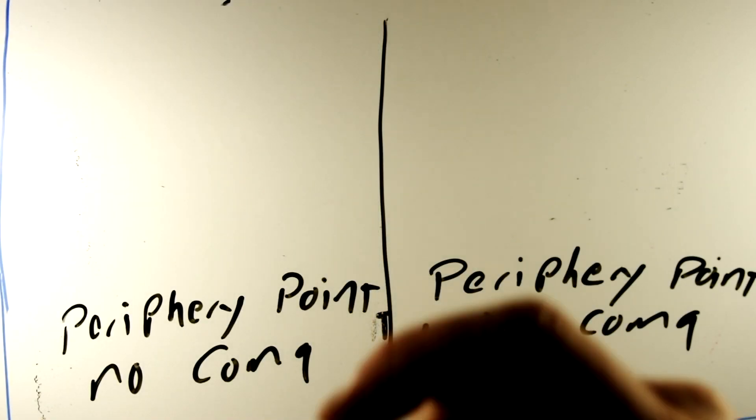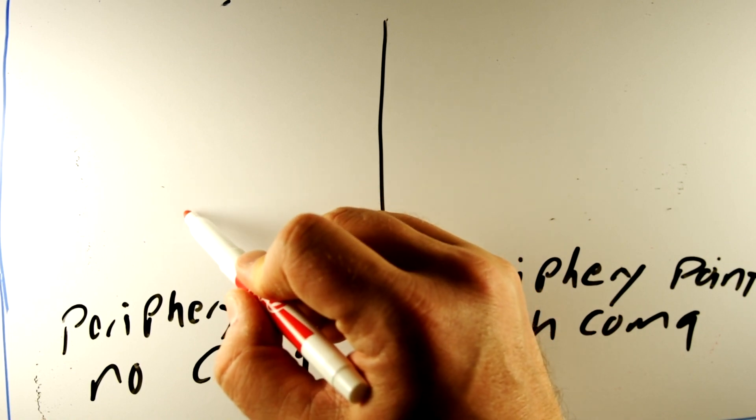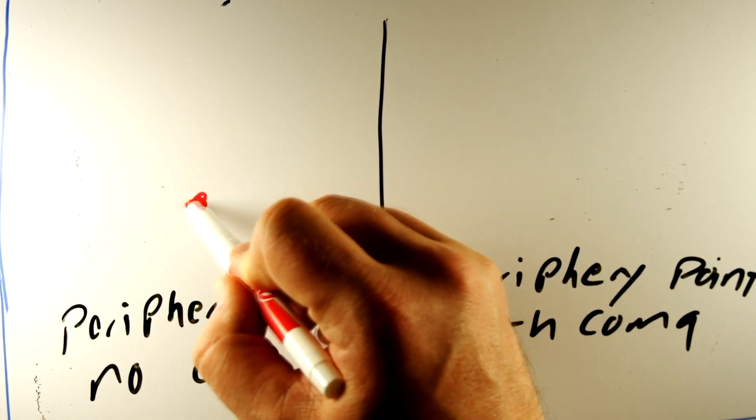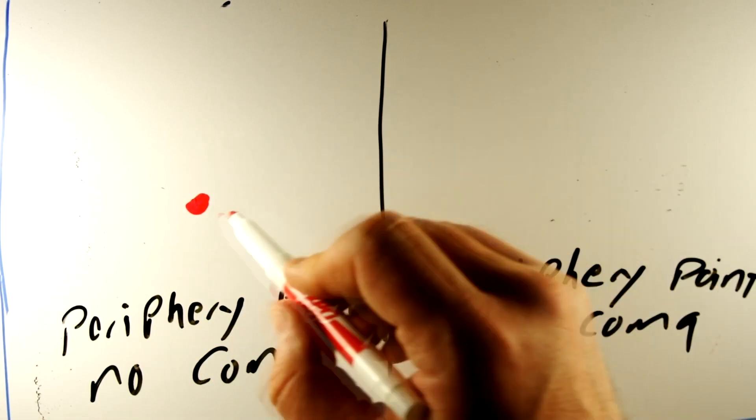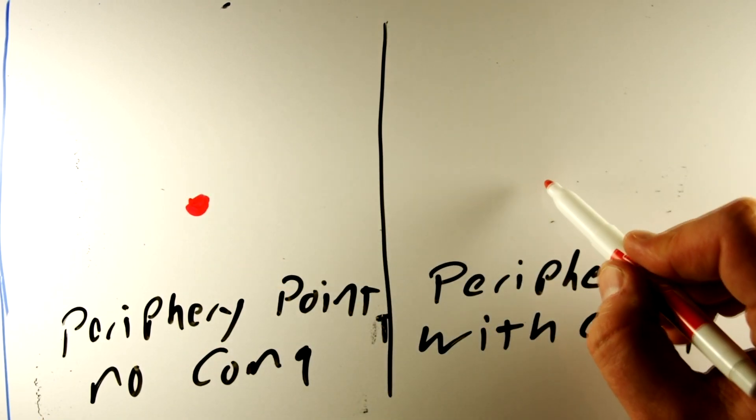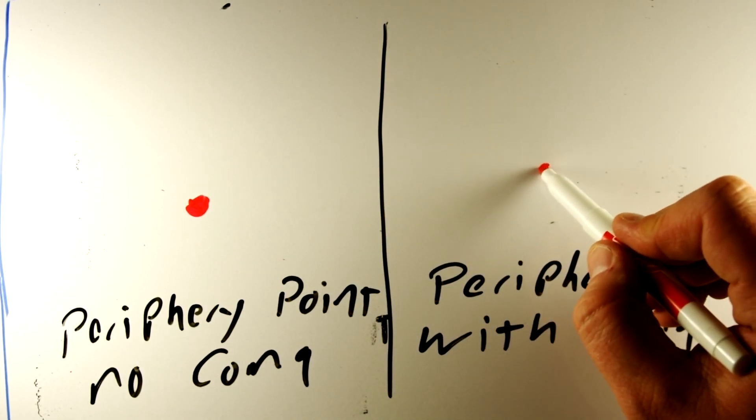So, that's what coma is. Coma is just a loss of a point source of light's ability to be a point and turning it into a cone or some other similarly related shape as you get closer and closer to the edge of a frame.